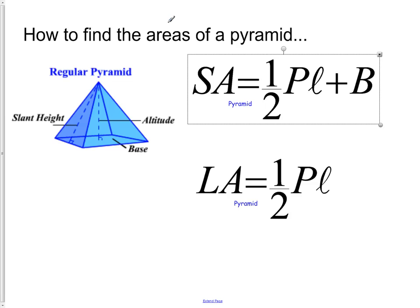How to find the areas of a pyramid? There's two types of areas, remember. We have the surface area and we have the lateral area. To find surface area, we take one-half times P. P stands for perimeter. So one-half times perimeter times that cursive letter L there. That cursive letter L stands for slant height.